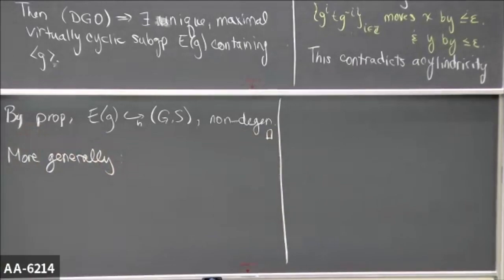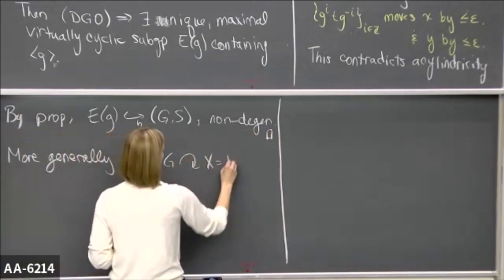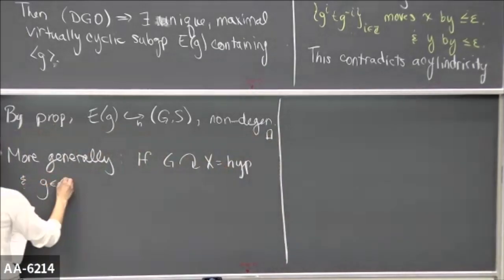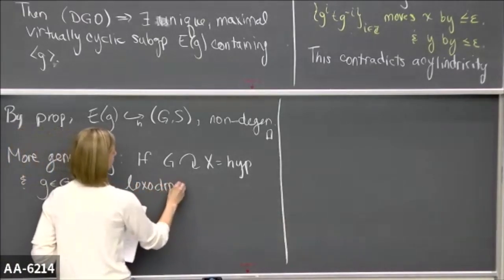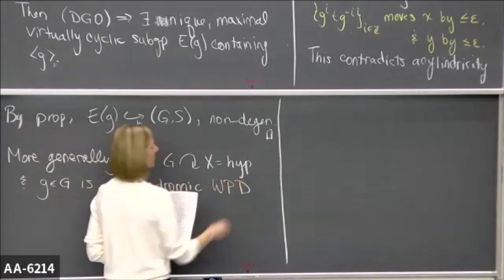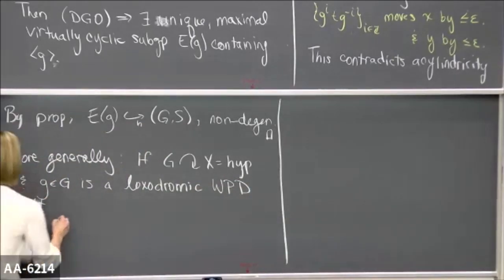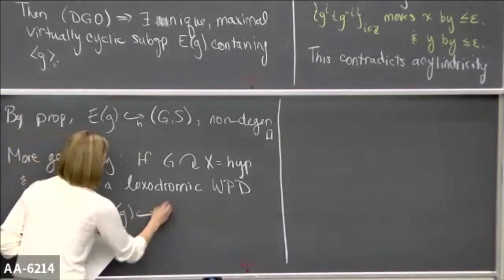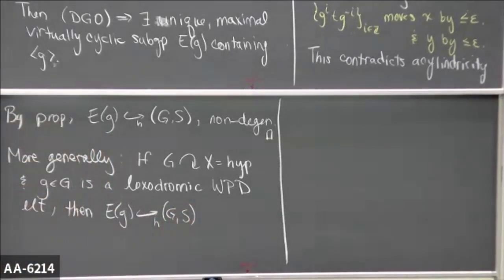If you have a group acting on a hyperbolic space, and in this action there's an element that is loxodromic and also satisfies a condition called WPD, then you also get this virtually cyclic subgroup that will hyperbolically embed into the group with the same relative generating set — the relative generating set coming from Milner-Schwartz. So what is WPD?